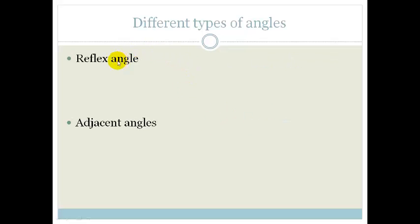Let's look at a reflex angle. A reflex angle is something slightly different. This is an angle that is bigger than 180 degrees. So a reflex angle is an angle that is bigger than 180 degrees.